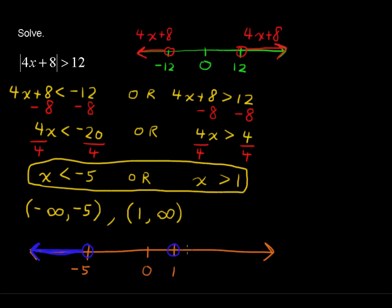And likewise all the numbers to the right of positive 1 would satisfy this inequality. So I know even though we started with an or, we can say all of these numbers and all of these numbers satisfy this inequality, or our solutions to this inequality.